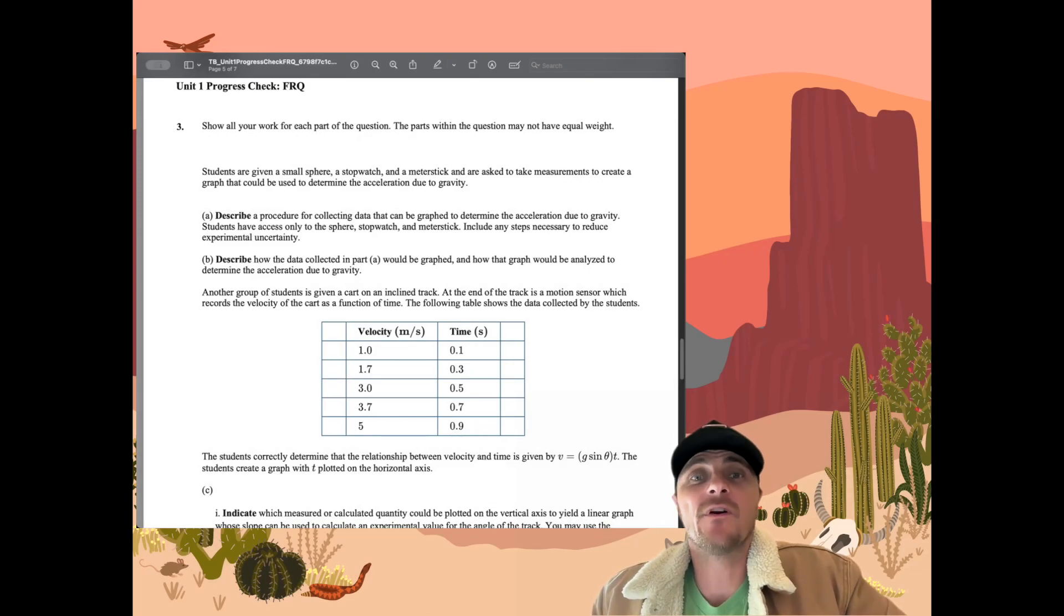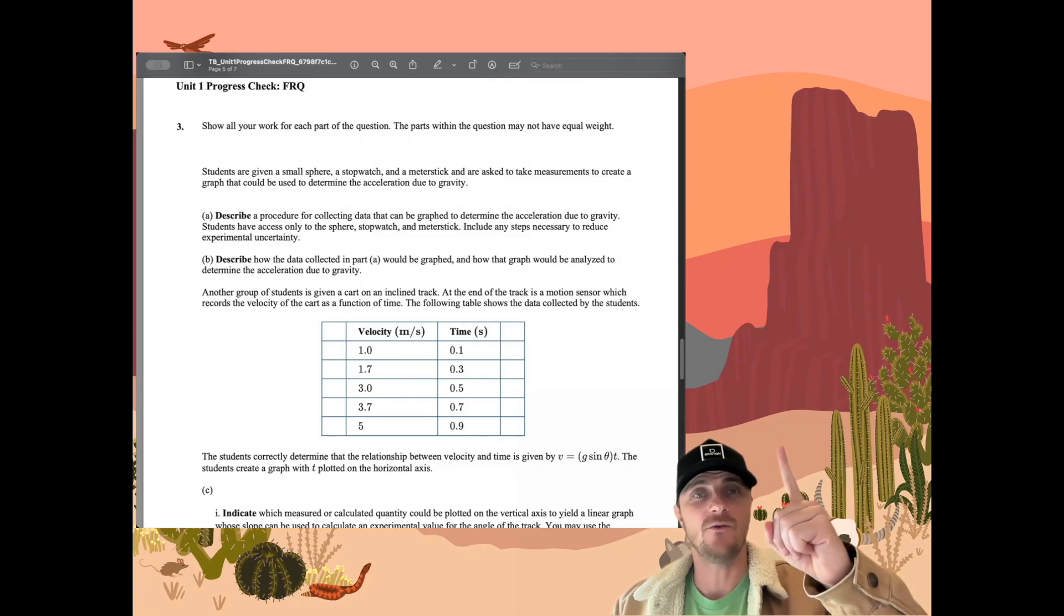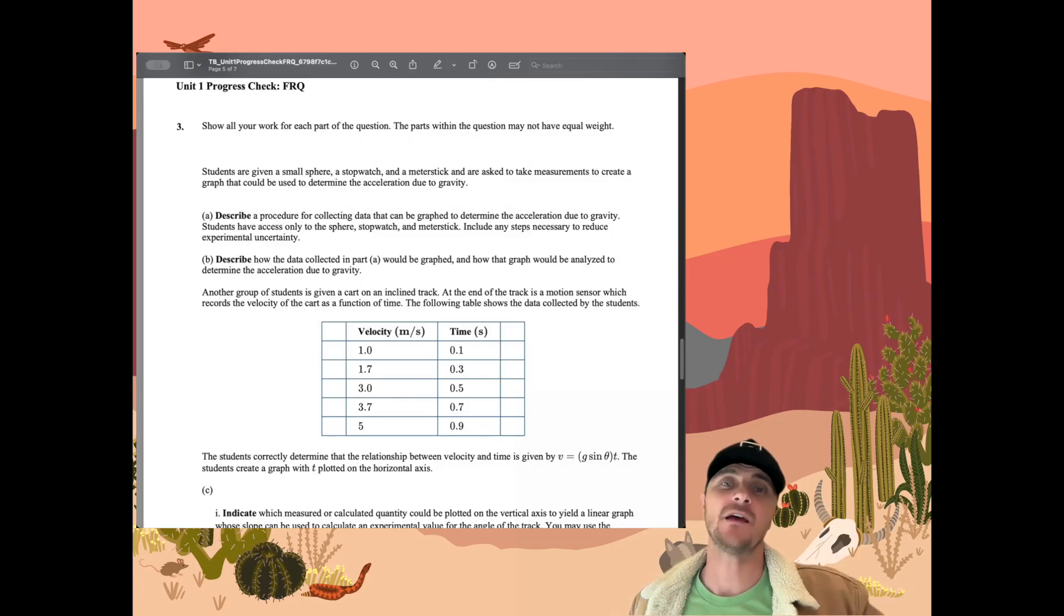Hey AP Physics students, welcome in for another progress check from AP Classroom. This is number three, unit one, and we're taking a look at an experimental design FRQ. Let's get into it.